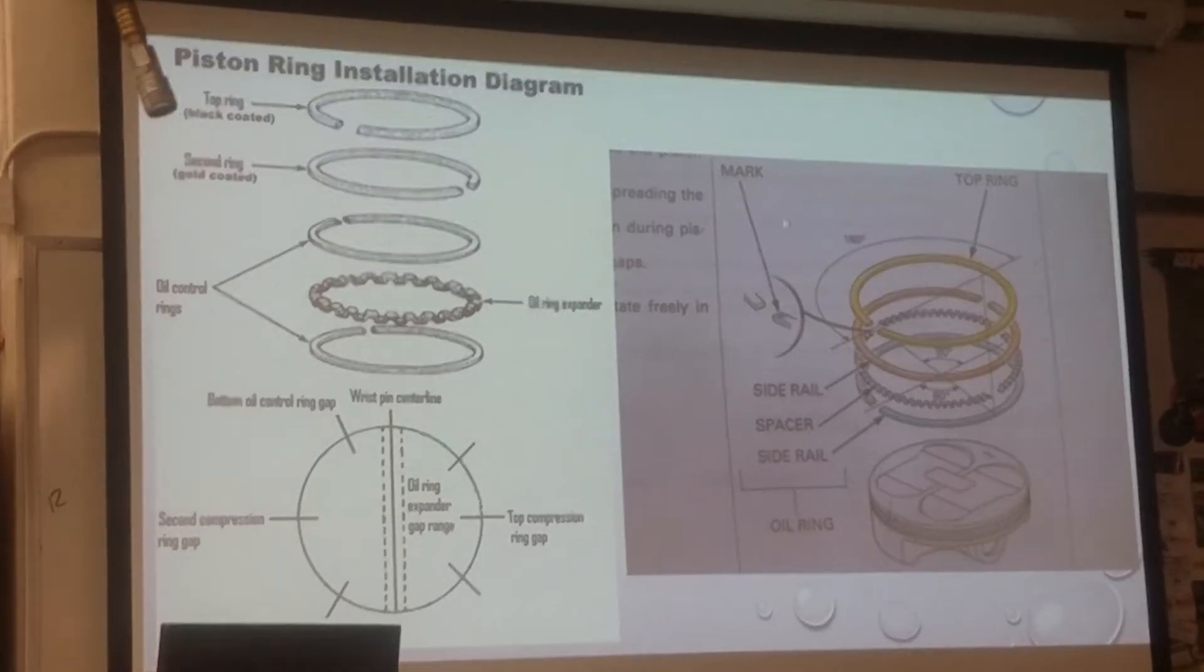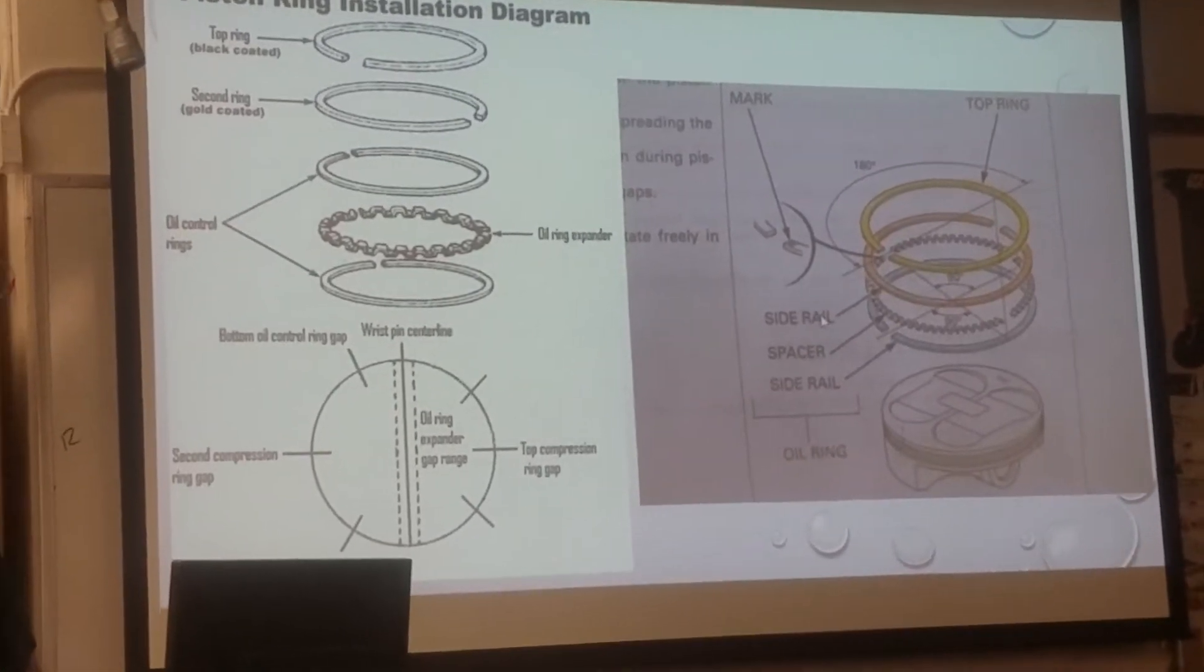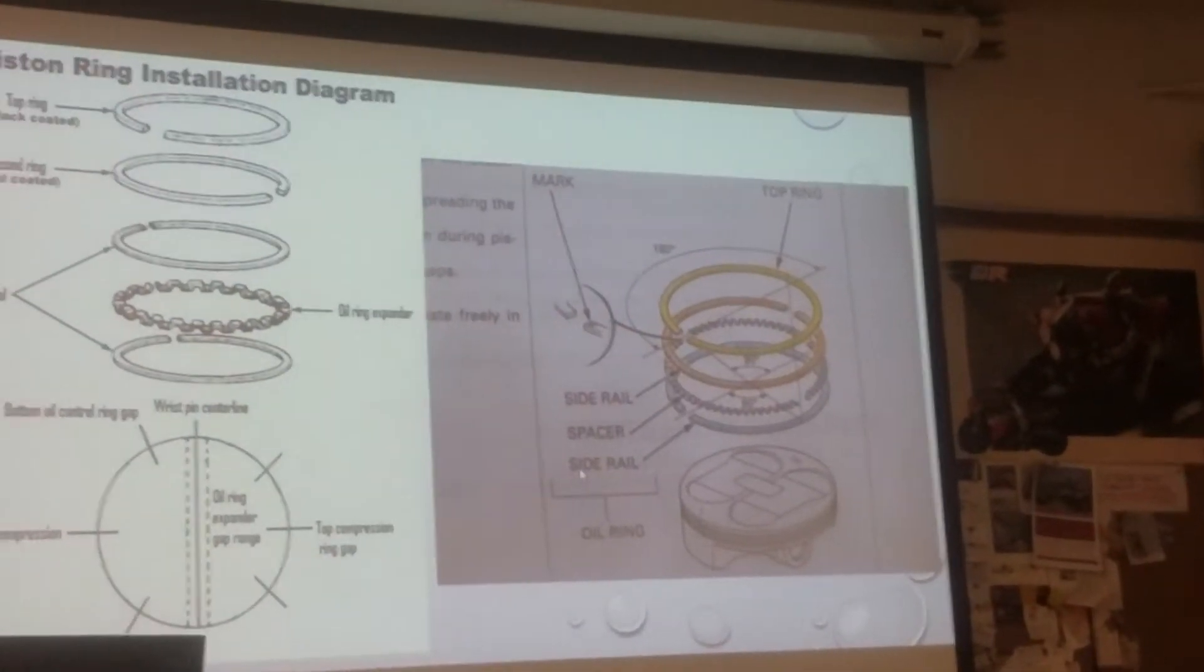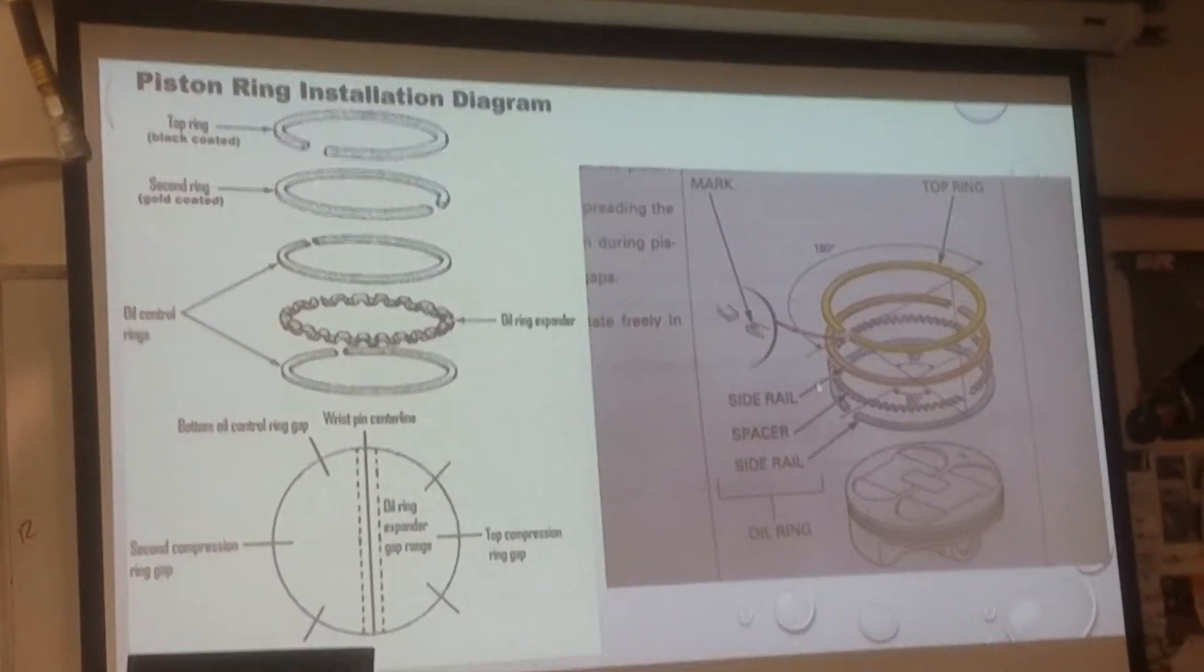Just pay attention to the name of these two pieces, what they call it. Side rail, scraper for the oil, and side rail. We have upper and lower.